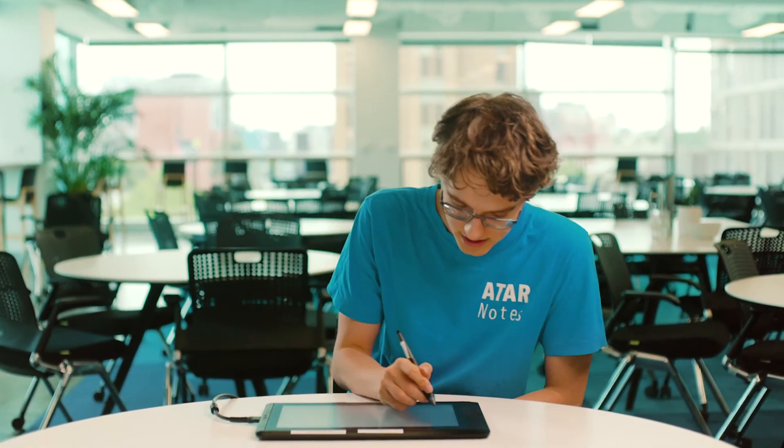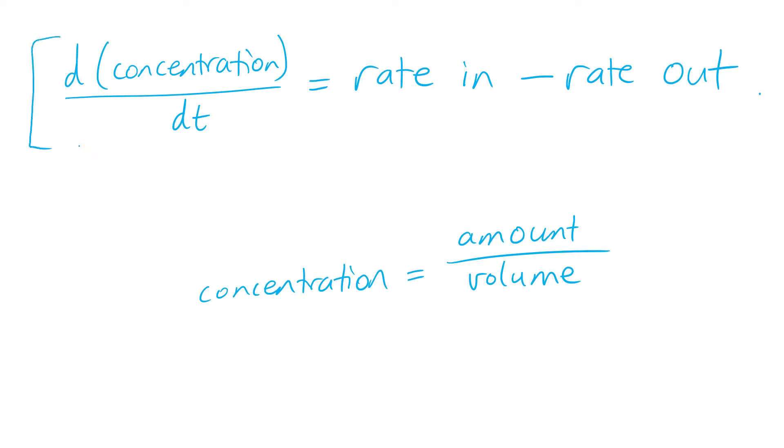So when they ask you to do these questions, this formula is key. The rate of change of concentration only depends on the rate going in and the rate going out. And the rate in and the rate out are for the rate of the substance.